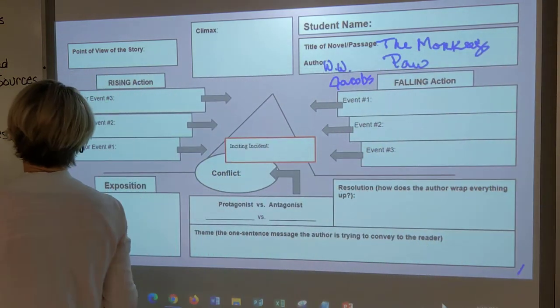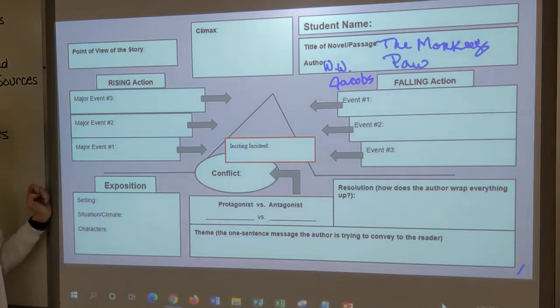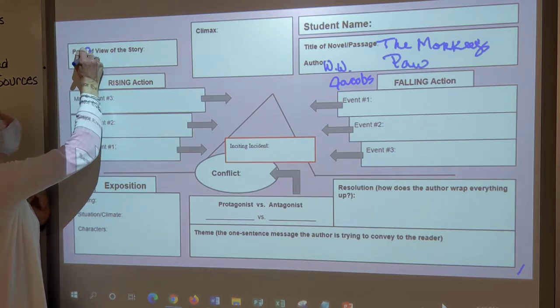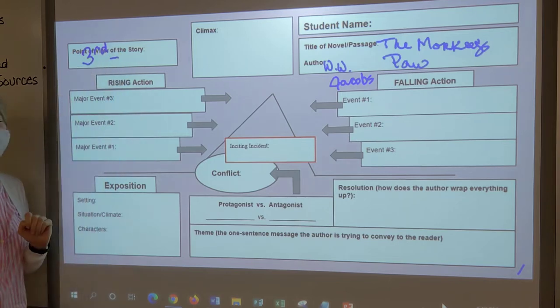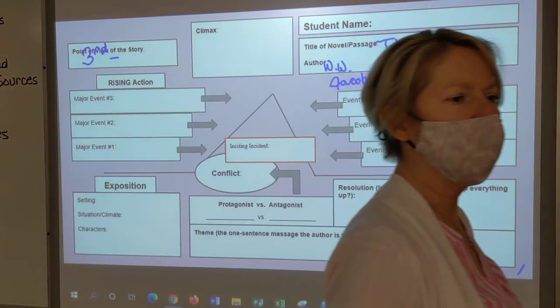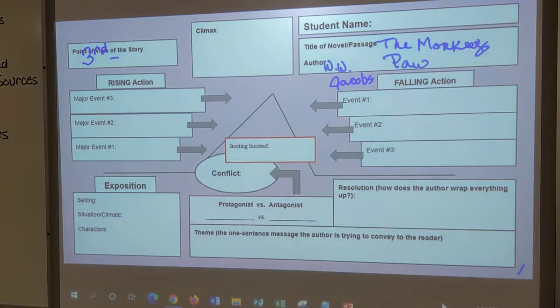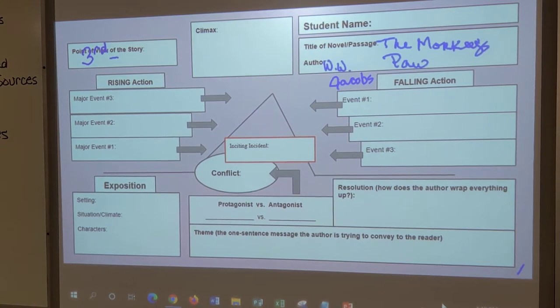So let's start up here for a second. Who's telling the story? The narrator. So it is what? Third person. Is it limited, objective, or omniscient? Remember, do we know anybody's feelings except in quotes? No.